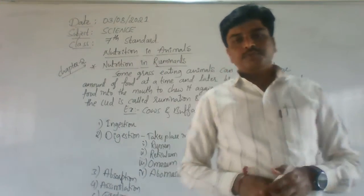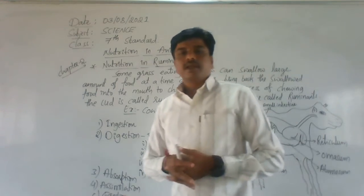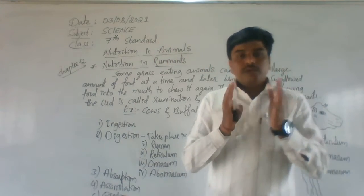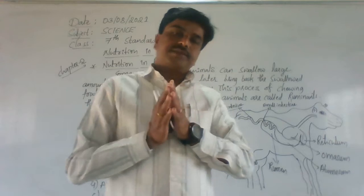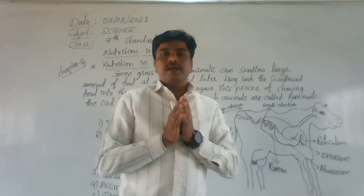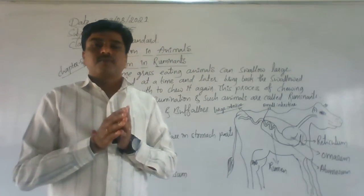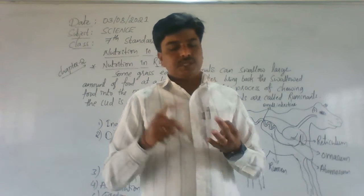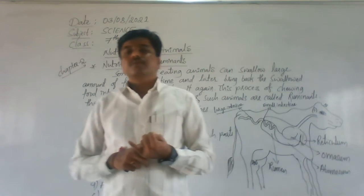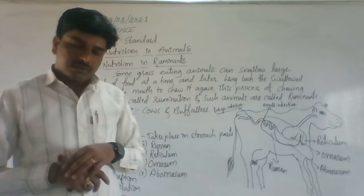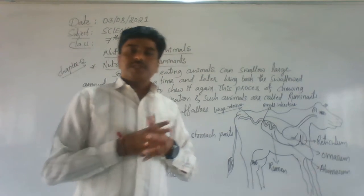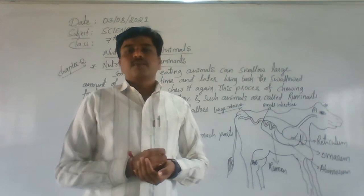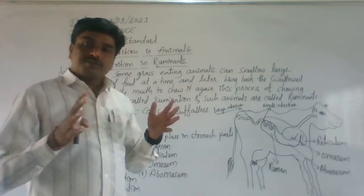Welcome to this class. In our last class we covered how nutrition is expressed in human beings. The five main nutrition steps are ingestion, digestion, absorption, assimilation, and egestion. These are how the nutrition steps are expressed in human beings. Now I am coming with the last concept of this chapter.